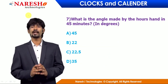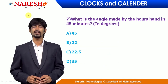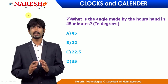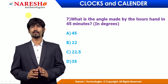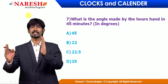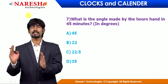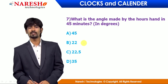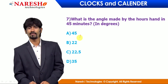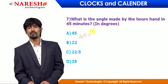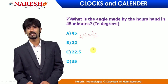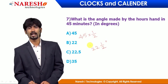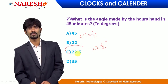Question 2: what angle is made by the hours hand in 45 minutes? We know 1 minute makes 0.5 degrees, so 45 × 0.5 = 22.5 degrees. Mark the answer as option C.